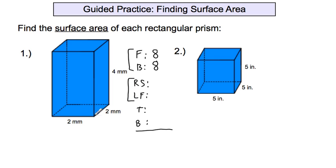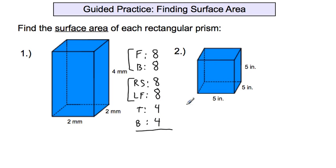The right side is two centimeters times four centimeters, which is also eight. The left side is going to be eight as well. Then the top: all of the horizontal ones are two, and from the front to the back is also two. So the top is two by two, which is four, and the bottom is four. Adding up: eight plus eight is 16, plus eight is 24, plus eight is 32, plus four is 36, plus four is 40.